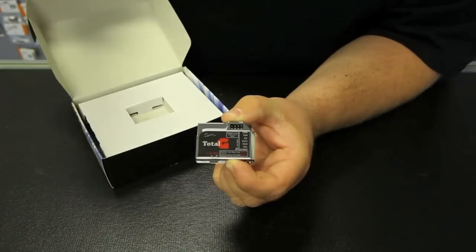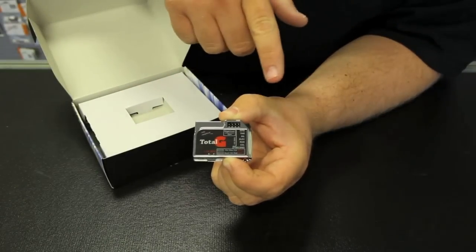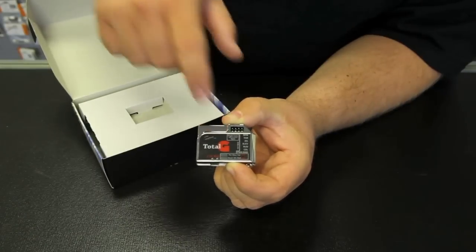If you run a Futaba receiver, it does include the wires to attach it. So you can run your regular Futaba receiver and this in line with it.